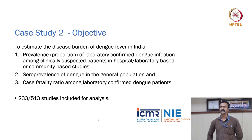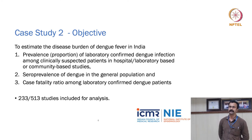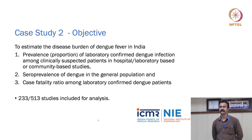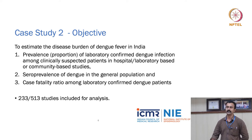Case study two's objective is to estimate the disease burden of dengue fever in India. There are three objectives: first, to look at the prevalence or proportion of laboratory-confirmed dengue infection among clinically suspected cases in hospital-based, laboratory-based, or community-based studies; second, to look at seroprevalence of dengue in the general population; and third, the case fatality ratio among laboratory-confirmed dengue patients. Here, 503 articles met eligibility criteria and 233 were considered for analysis.